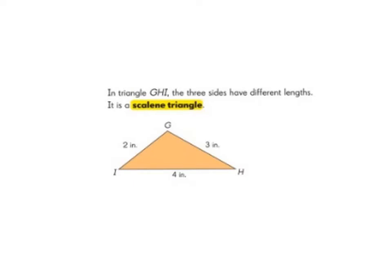The third type of triangle that we can classify according to the lengths of the sides is called a scalene triangle. In a scalene triangle, all three sides have different lengths. So if we look at triangle GHI, we can see that GI has a length of 2 inches, GH has a length of 3 inches, and IH has a length of 4 inches.